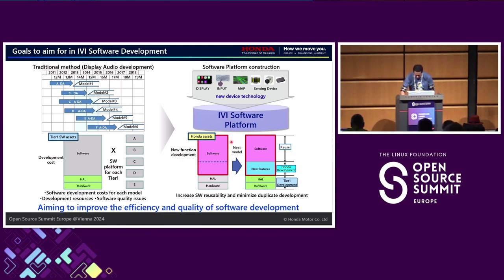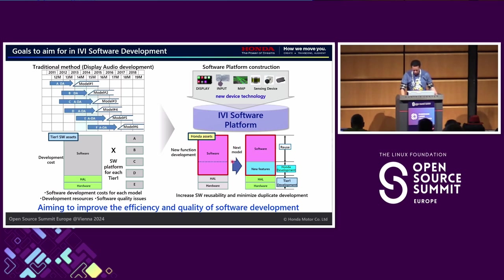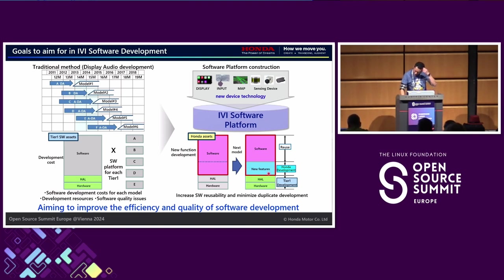This is our background for IVI software development at Honda. This is our software platform image. The pink zone is the software platform. Hardware and HAL are developed by the tier-one company, and the upper side is developed by the Honda side. We have a platform approach to in-house software development. If a new feature request comes in, this platform approach applies to the blue color area, making it very easy to develop new feature software.